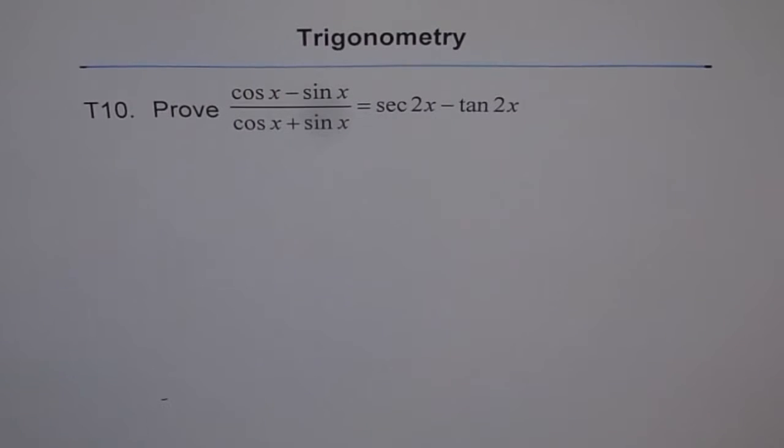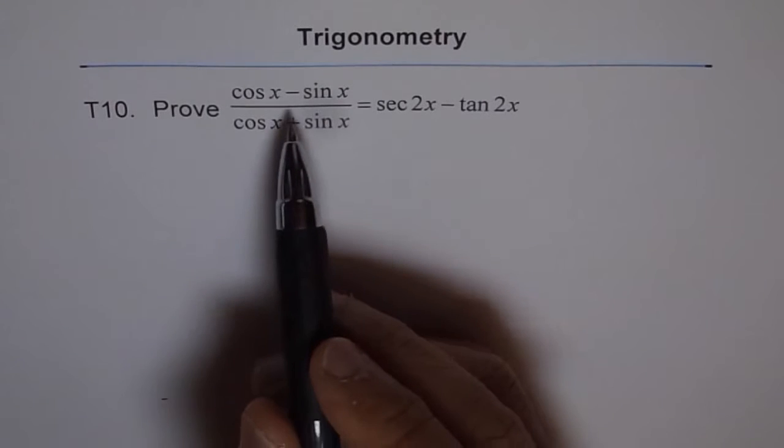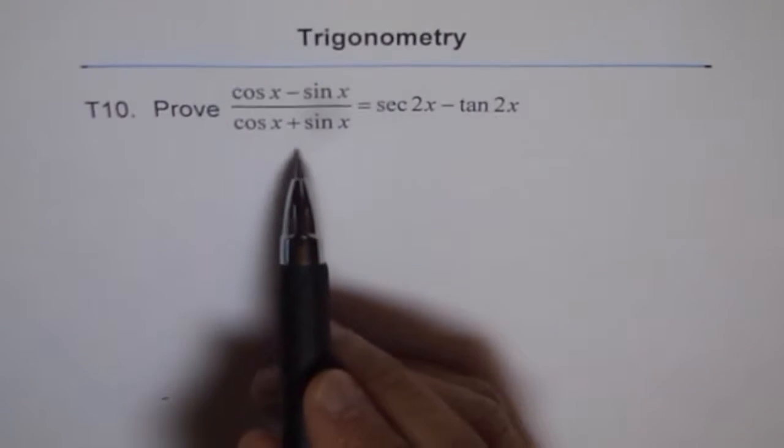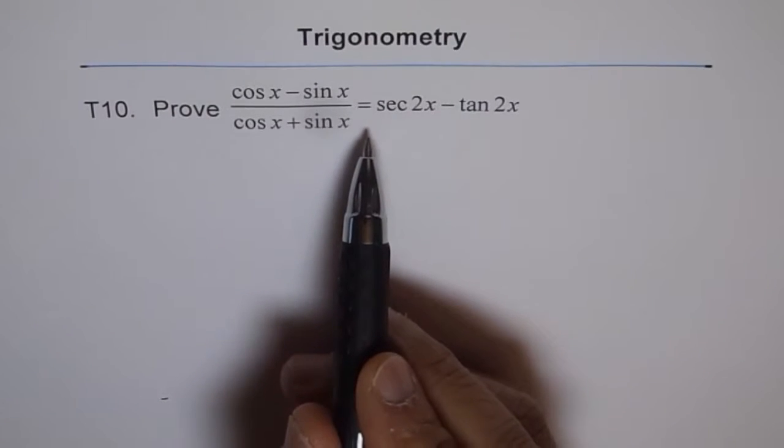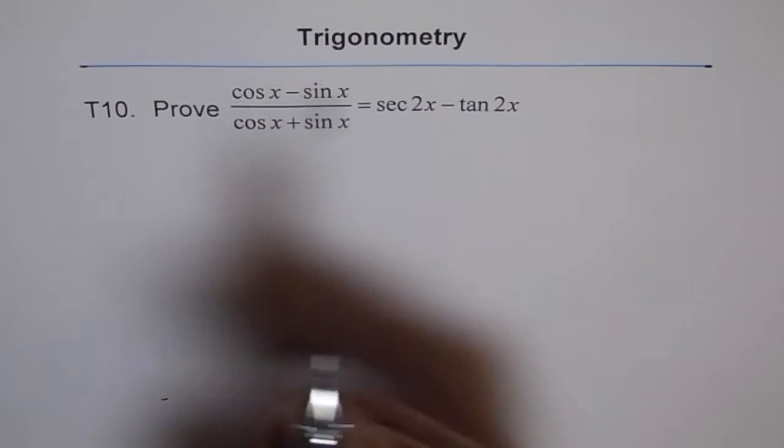Trigonometry, T10, is a thinking test problem. Prove cos x minus sine x divided by cos x plus sine x equals secant 2x minus tan 2x.